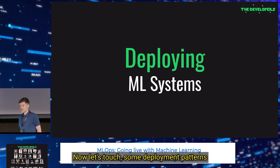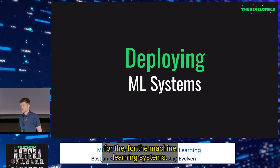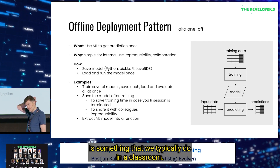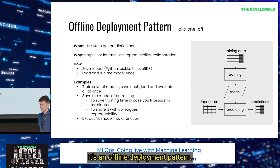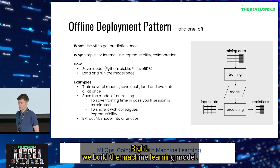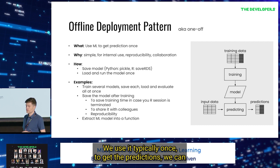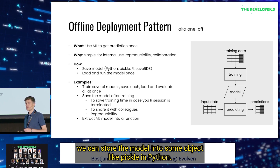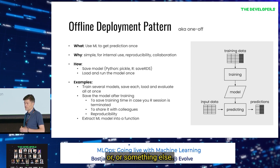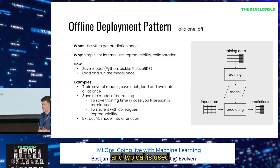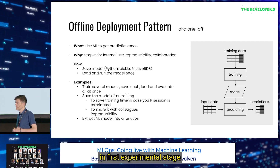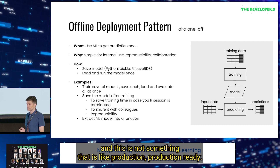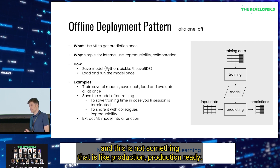Now let's touch some deployment patterns for machine learning systems — we'll talk about four patterns. The first one is something we typically do in a classroom: the offline deployment pattern. It's a one-off approach. We build the machine learning model, use it typically once to get predictions, and can store the model into some object like pickle in Python. This is typically used in the first experimental stage where we try different models and compare them — it's not production-ready.